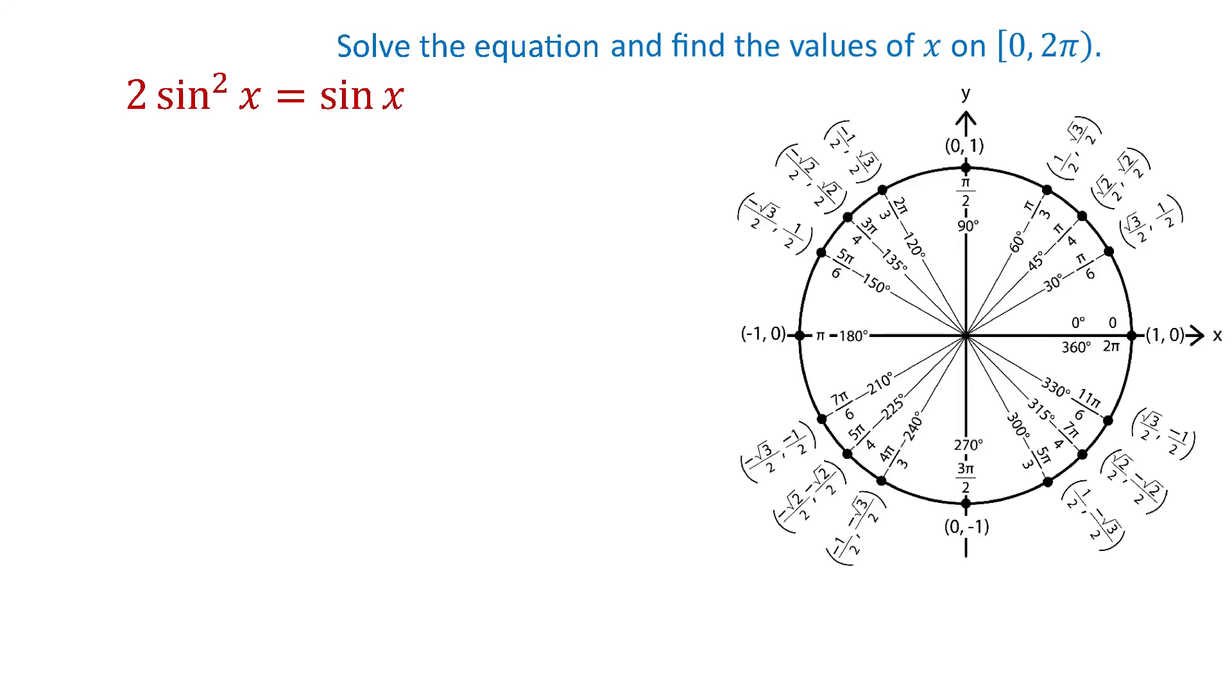In this video we will solve the equation 2 sine squared of x equals sine of x and we will find the values of x on the interval from 0 to 2π. So the values of x can be 0 or greater than 0 but they have to be less than 2π.